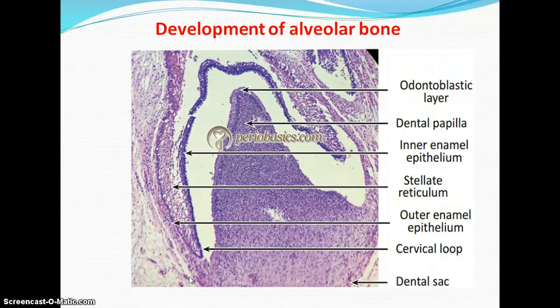The deciduous teeth erupt and give rise to the alveolar bone. When permanent teeth are formed, they resorb the roots of the deciduous teeth and occupy the alveolar socket. Developing tooth buds of the maxilla and mandible are surrounded by loose woven bone, and with the development of the teeth, this bone is converted into lamellated bone.